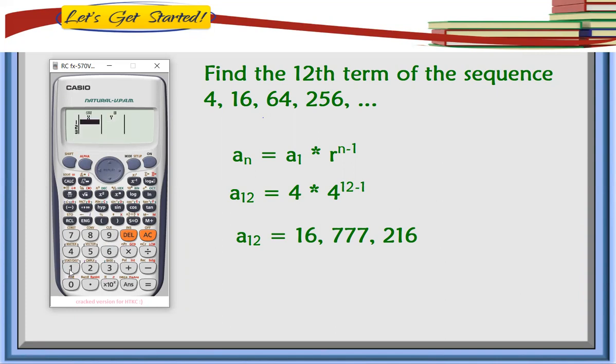Now we're going to input the term numbers: first term, second term, and third term. Input the corresponding values. For the first term we have 4, we have 16, and we have 64.